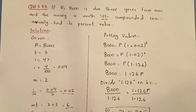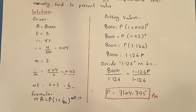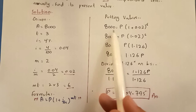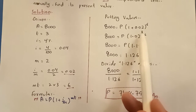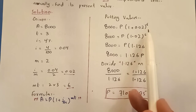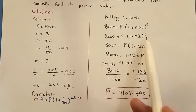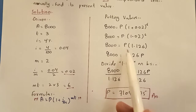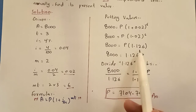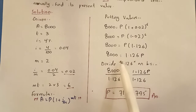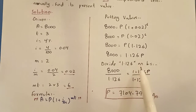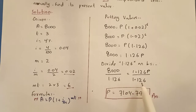The formula for compound amount is A equals P bracket 1 plus I divided by M, whole power M times T. Putting the values: 8,000 is equal to P bracket 1 plus 0.02, whole power 6. Solving the bracket: 1 plus 0.02 gives 1.02 to the power 6, which equals 1.126. So 8,000 equals 1.126 P. Dividing both sides by 1.126 gives us the present value P.